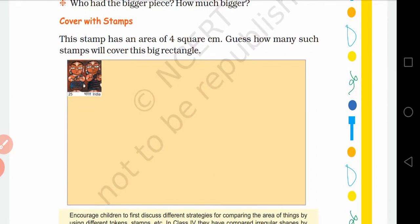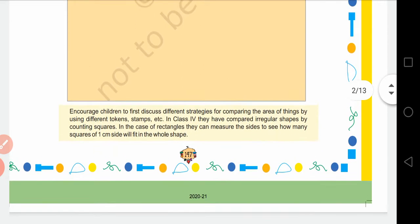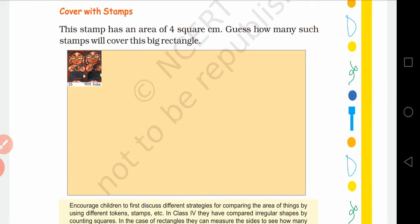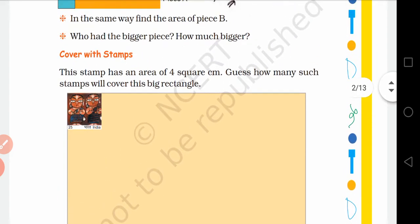Now, cover with stamps. This stamp has an area of 4 square centimeter. Guess how many stamps will cover this big rectangle. So here is a space provided to you on page number 147. In that particular space there is a stamp given to you and the stamp has an area of 4 square centimeter. Jo stamp diya hua hai uska area hai 4 square centimeter. To usi tarah hum kitne stamps ko arrange kar sakte hain in that particular space. Jo big rectangle diya hua hai us ke andar hum kitne stamps rakh sakte hain. Jitne stamps rakh sakte hain multiplied by 4 karenge to uska area hamein pata chalega.